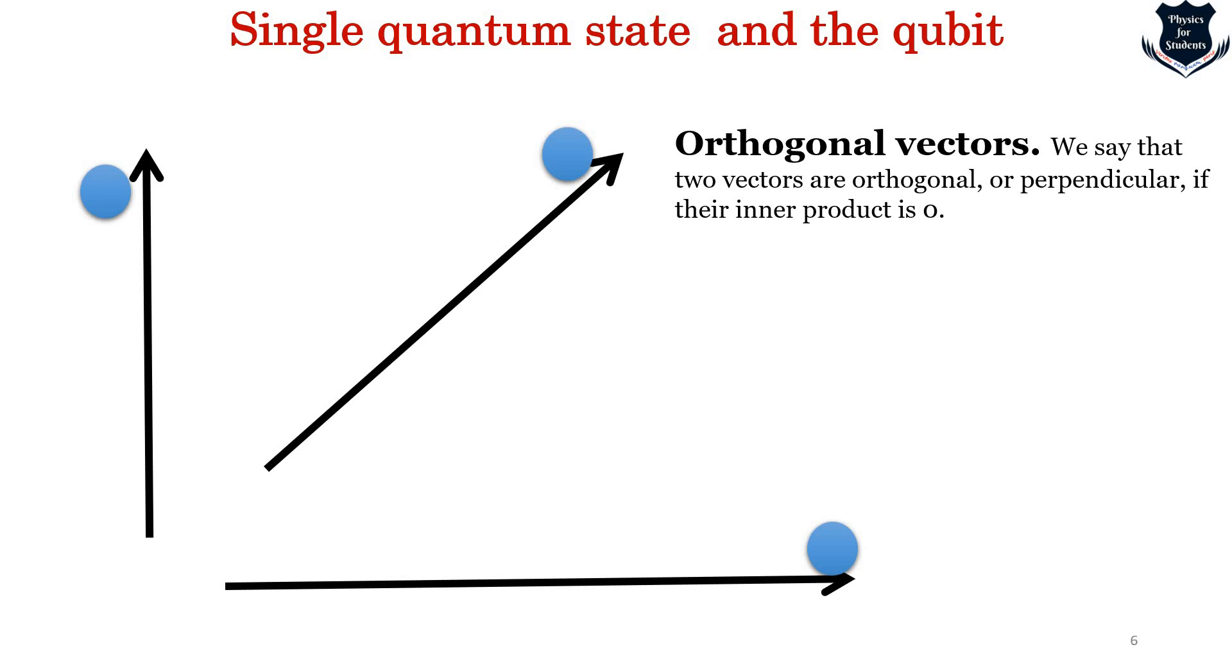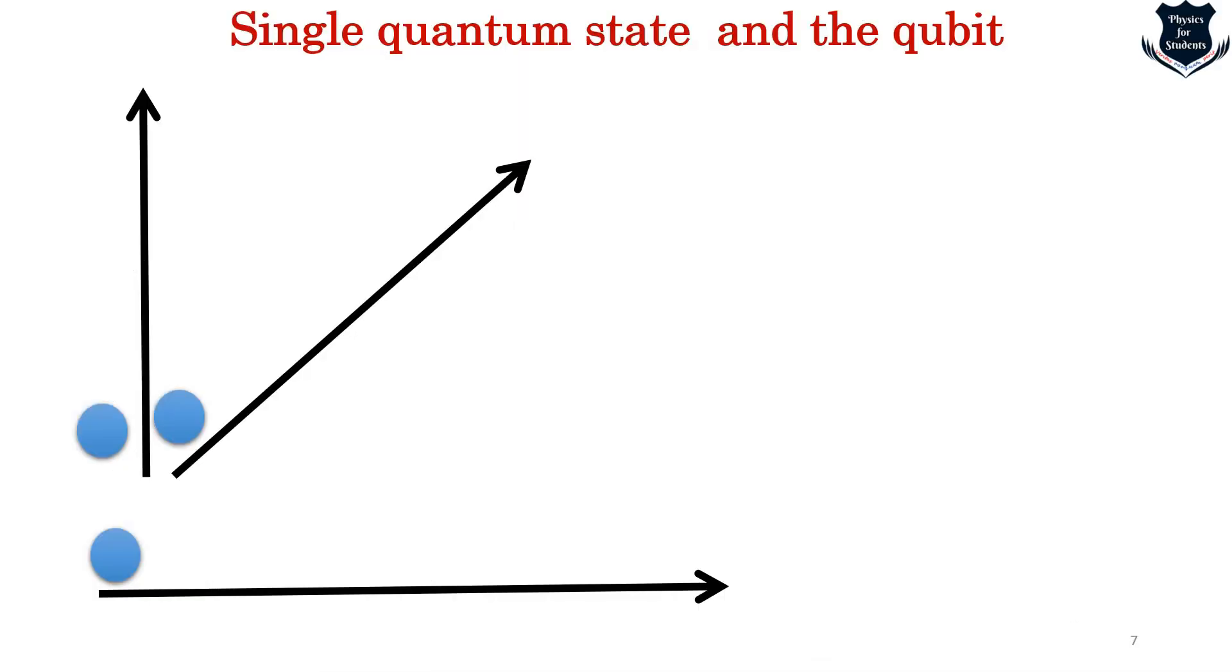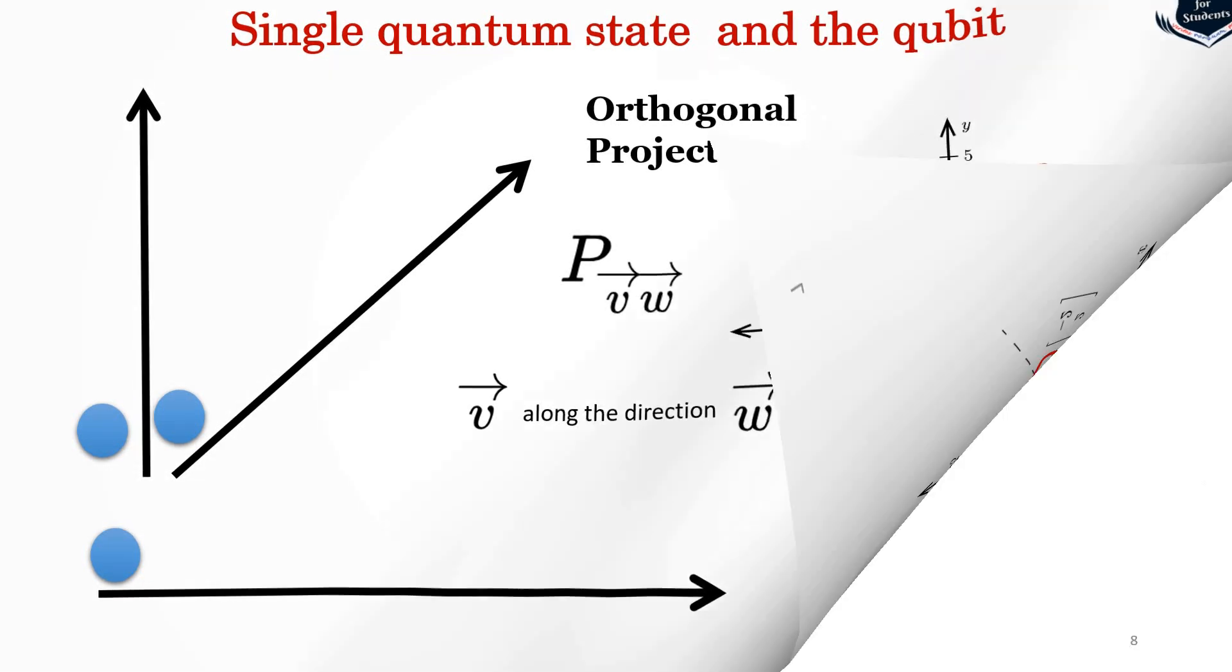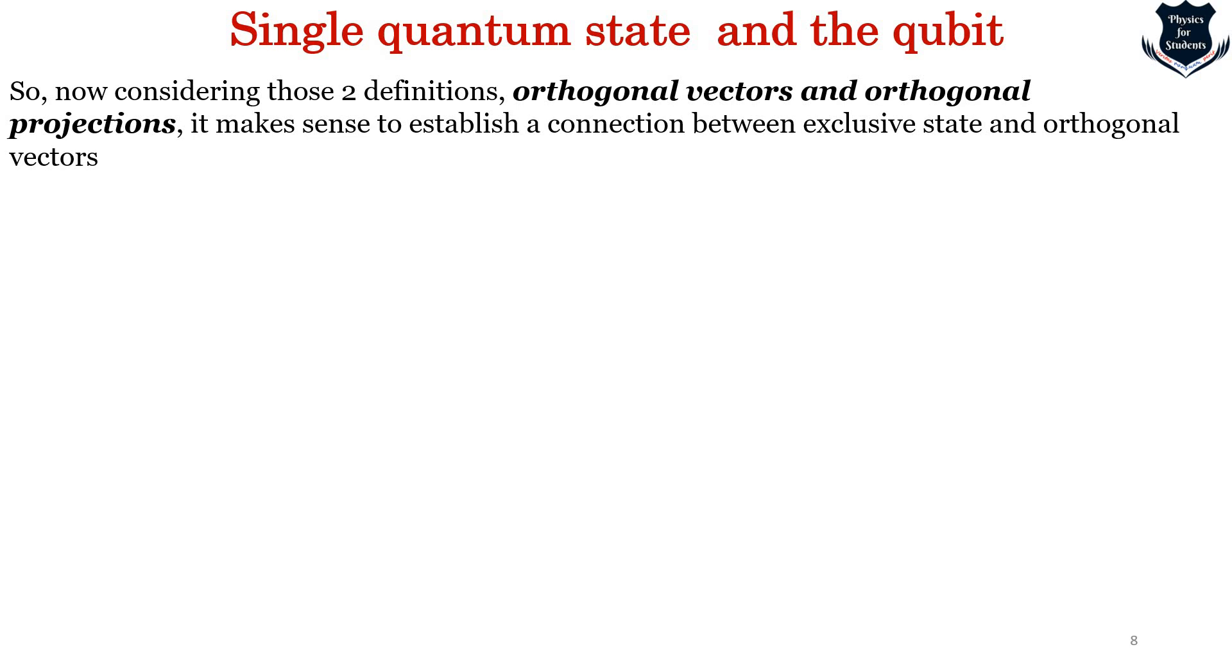Now if you have recounted to my earlier lectures, there is something which is called an orthogonal vector. A vector is orthogonal when their inner product is zero. Let me give you a quick example. This is orthogonal because once we find the dot product we find it to be zero. Now there is something called an orthogonal projection. The projection vector PVW, which is the subscript of V onto W, gives the component of V along the direction of W. PVW is basically a scalar projection, a scalar number. Considering these two definitions - orthogonal vectors and orthogonal projection - it makes sense to establish a connection between exclusive states and orthogonal vectors.